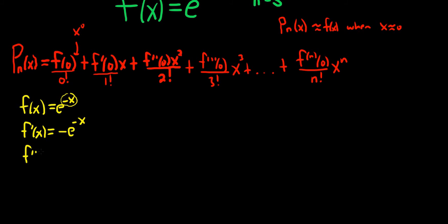Taking the derivative again, we'll use the chain rule again, and then it'll turn back into a positive because we'll get negative 1 times negative 1. Doing it again will give us negative e to the negative x.